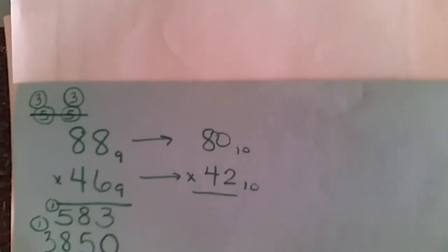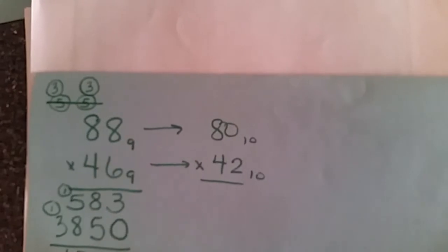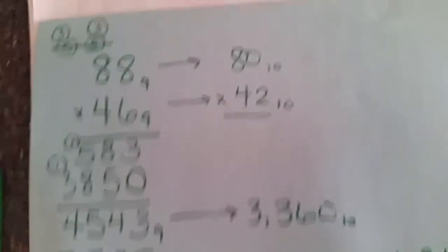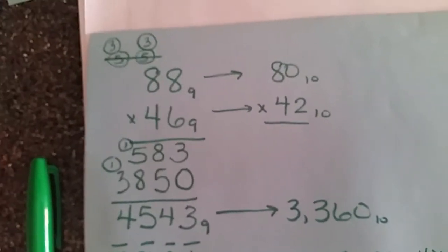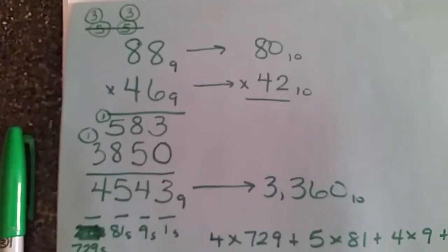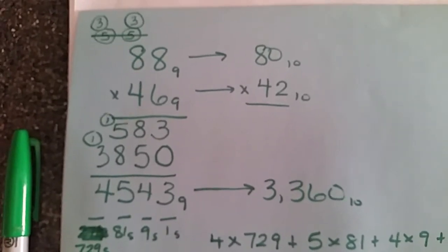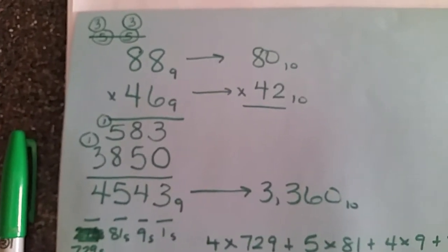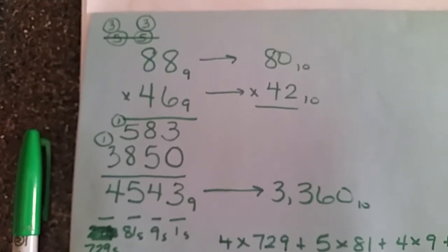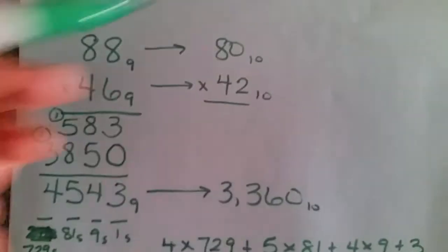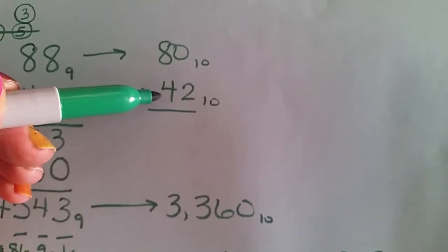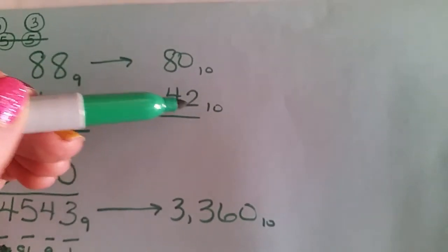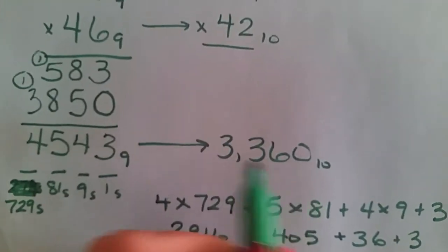I get 3,360. So that's what the answer should be. So now to check this then, we would take 80 times 42 and make sure that that comes out to be 3,360. And when we check that out, it does actually check out. The 80 times 40 would be 3,200 and 80 times 2 would be 160. So that comes out to be 3,360.